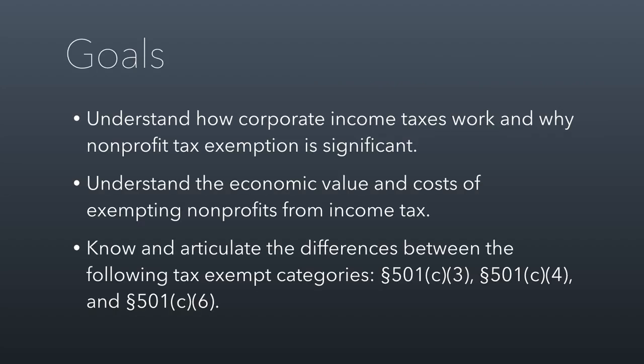For session 2.1, we're going to talk about the corporate income tax and how it works and why it's important for nonprofits to be tax exempt. There's a public policy issue at stake that we're going to talk about. Then I'll cover the economic value and costs of exempting nonprofits from the income tax. Last, we're going to talk about three categories of tax exemption: C3, C4, and C6. These constitute probably 90% of tax exempt nonprofits.